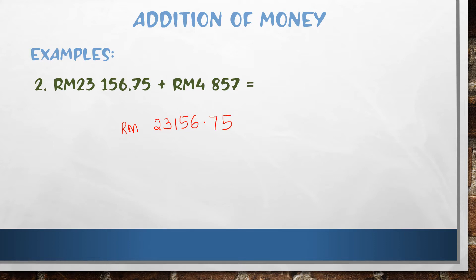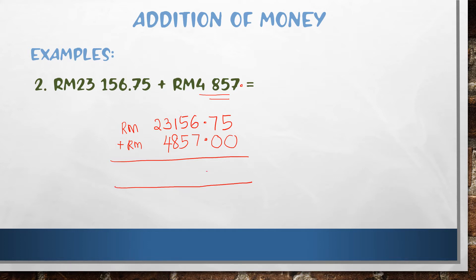Remember, if there is no decimal point shown, you still place the decimal point at the back. Write the decimal point first, then seven five eight four. For this number you must write zero zero zero after the decimal. Don't forget to write RM and the plus sign. Write the decimal point first, then add this number.